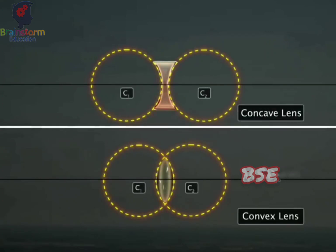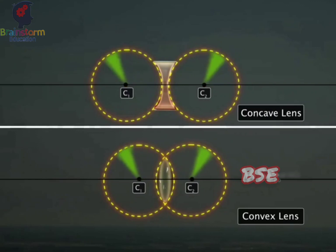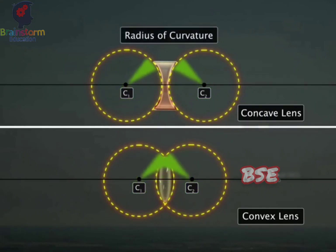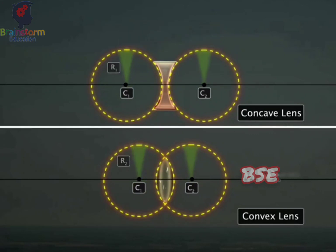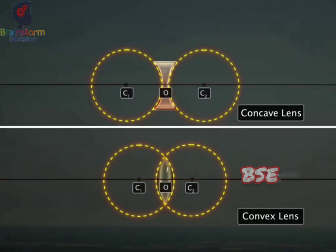Each surface of a lens is a part of a sphere. The center of the sphere is called the center of curvature of the respective surface. The radius of the sphere is known as the radius of curvature of the respective lens surface. The line joining the two centers of curvature of a lens is called the principal axis. The point at which the principal axis passes through the center of the lens is called the optical center of the lens.